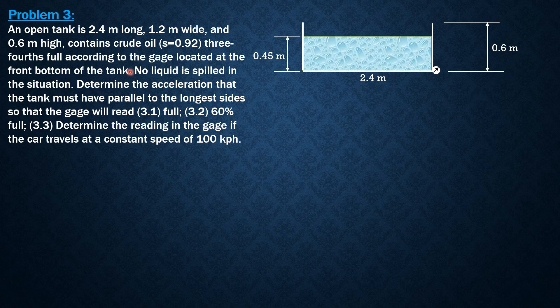Since initially it reads three-fourths full, so three-fourths of 0.6—because it is a uniform tank—three-fourths of 0.6 is 0.45, so that's 0.45. Remember the gauge is on the front bottom, so this is the location of the gauge.